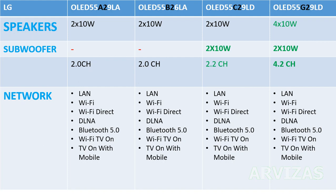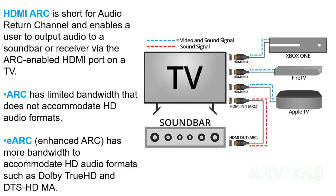Network connectivity includes LAN, Wi-Fi, Wi-Fi Direct, DLNA, Bluetooth 5, and Wi-Fi screen sharing between TV and mobile. Two newer features from budget models are not included. If you see an HDMI ARC port on the back of your TV, it is primarily for a soundbar, but you can use other devices with it — read the manual for other uses.